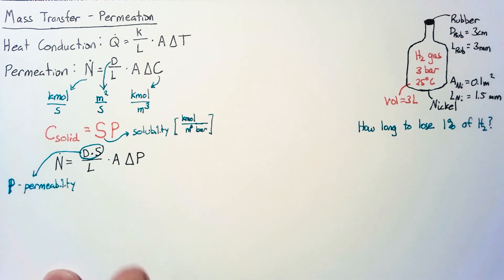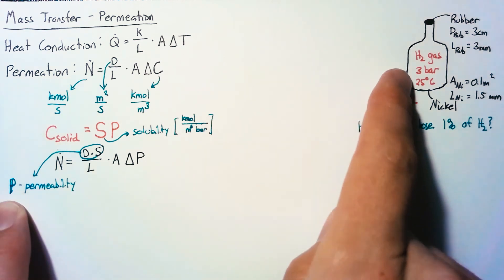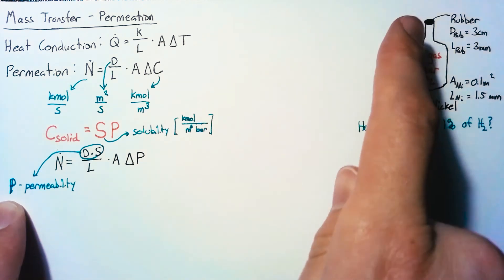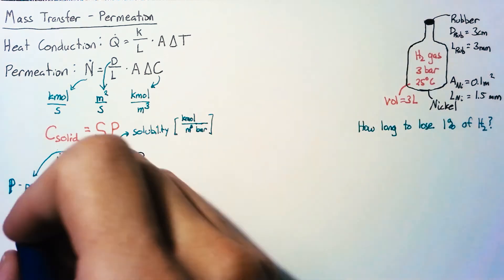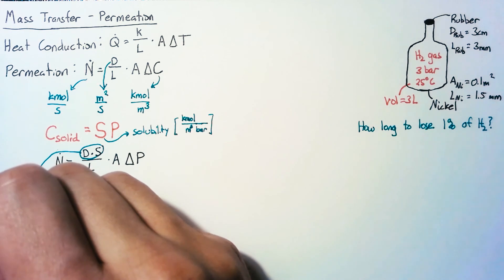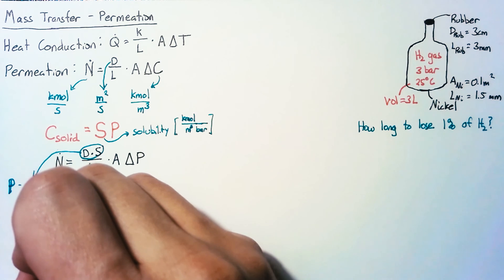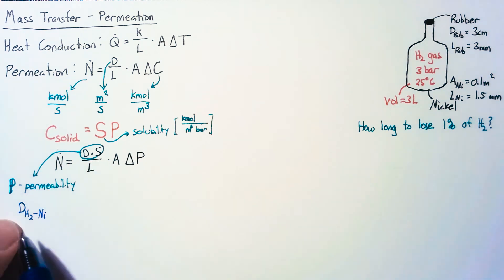To move forward we need to find the permeability both for hydrogen in nickel and hydrogen in rubber. It bears mentioning that these constants are specific not to a single material like thermal conductivity, but to both materials. The diffusion constant is for hydrogen specifically through nickel.